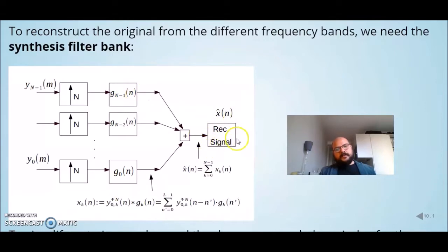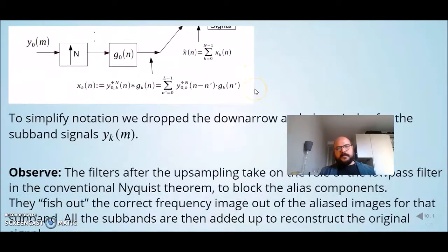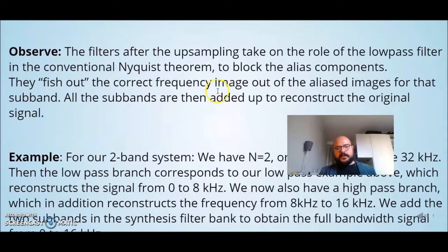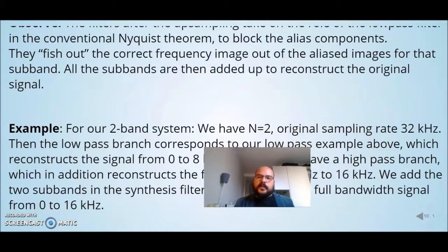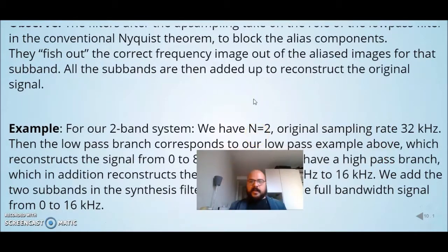We have our reconstructed signal. For example, in a two-band system with n equals 2, we have critical sampling,